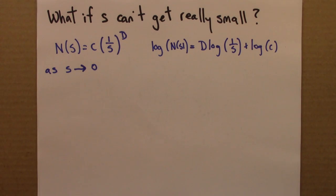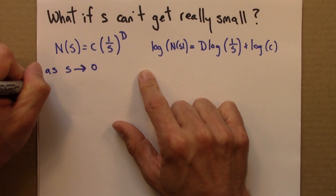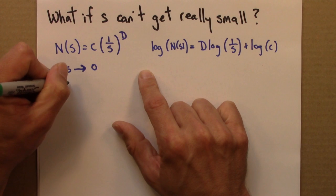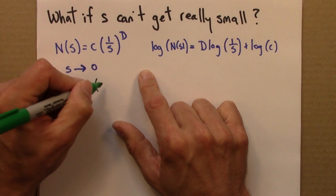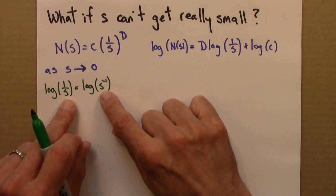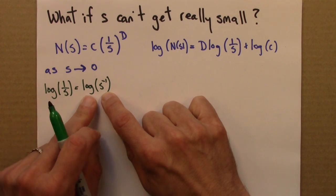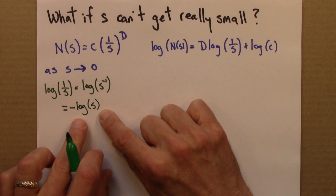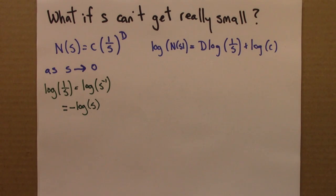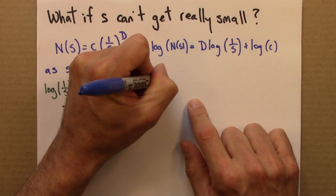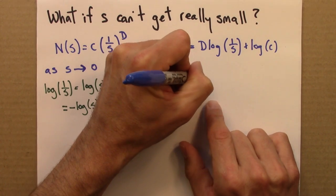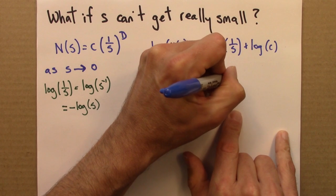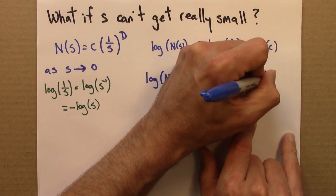I'm going to do one other little thing, which is use a property of logarithms. So log 1 over s, well that's the same thing as log s to the minus 1. 1 over s is s to the minus 1, so that's properties of exponents. And then we can use the exponent property for logs to write this as minus log s. So I'm going to replace log 1 over s with minus log s. So then this is going to become log N(s) equals minus D log s plus log c.